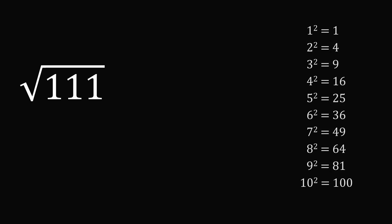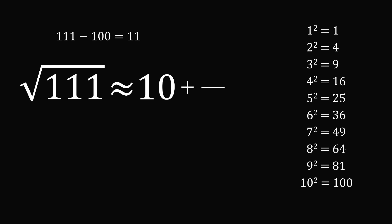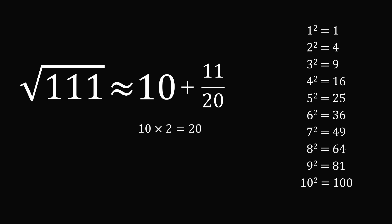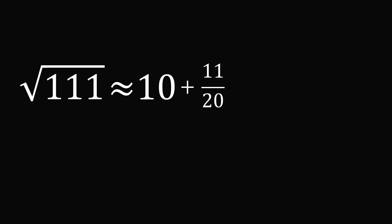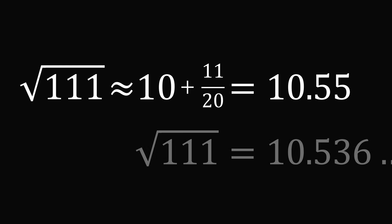Let's do another example: the square root of 111. 111 is closest to 100, which equals 10 squared. So the square root of 111 is approximately equal to 10 plus some adjustment. The numerator will be 111 minus 100, which equals 11, and the denominator will be double 10, which is 20. So the square root of 111 is approximately 10 plus 11 over 20, which equals 10.55. The actual value starts out as 10.536 — again, a very accurate approximation.